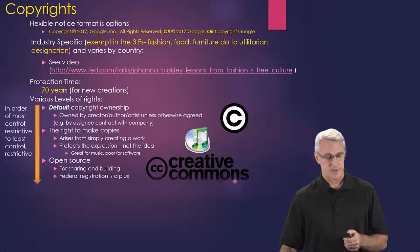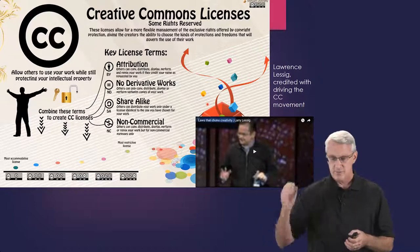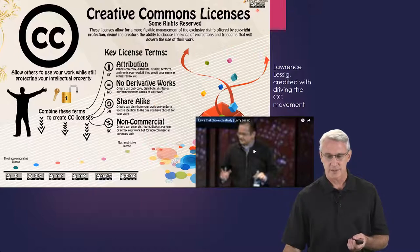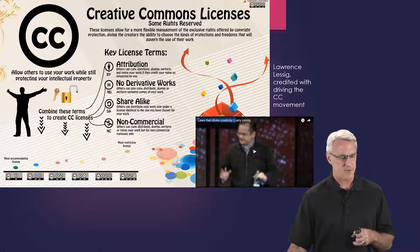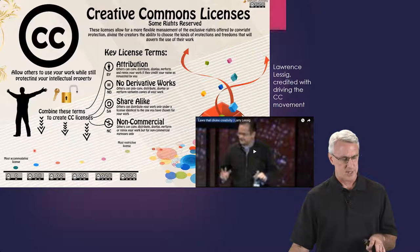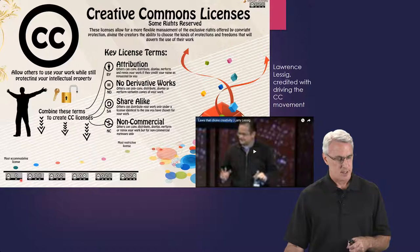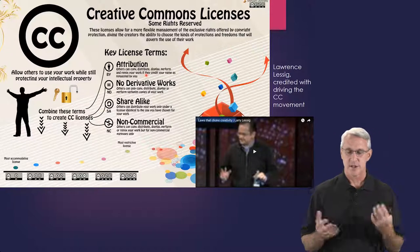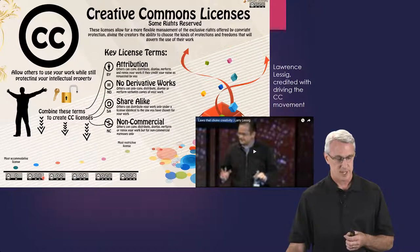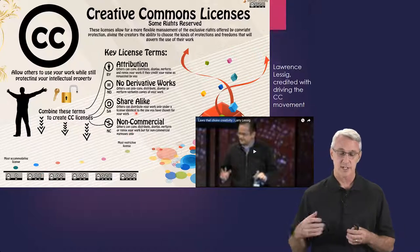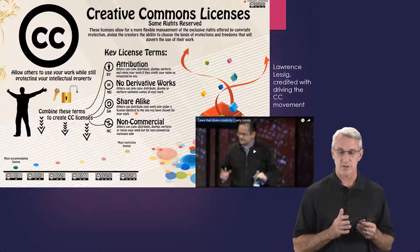Creative commons is a newer, least restrictive way of looking at copyrights, and even within it there's variation. I borrowed this slide from a creative commons source — Donnelly is the person who created it. It shows the different levels of accommodation from most restrictive to most accommodating. The most accommodating is CC-BY, with a little symbol of a person meaning attribution. You can copy, distribute, display, perform, and remix as long as you attribute who made it. The next level adds share-alike, meaning others can distribute your work only under a license identical to the one you chose.